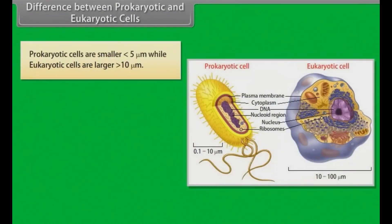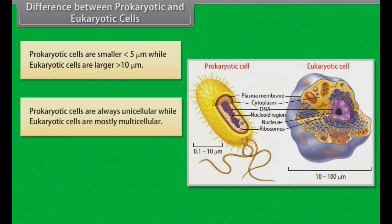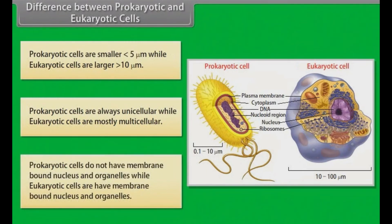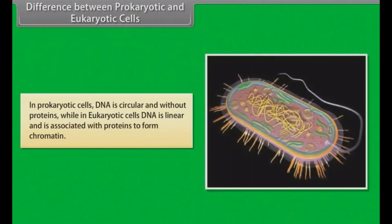Prokaryotic cells are smaller, less than 5 micrometers, while eukaryotic cells are larger, greater than 10 micrometers. Prokaryotic cells are always unicellular, while eukaryotic cells are mostly multicellular. Prokaryotic cells do not have membrane-bound nucleus and organelles, while eukaryotic cells have membrane-bound nucleus and organelles.